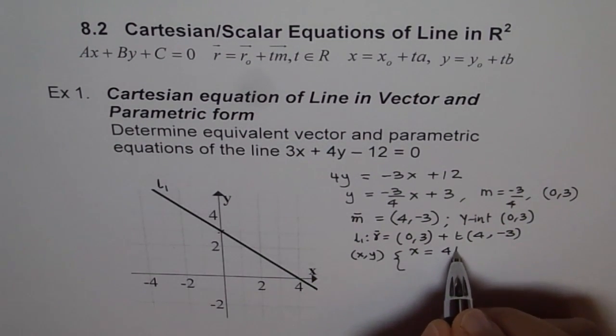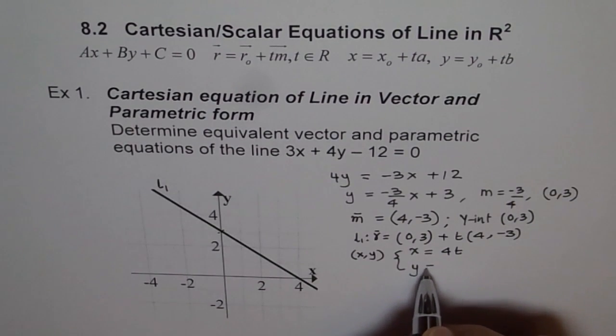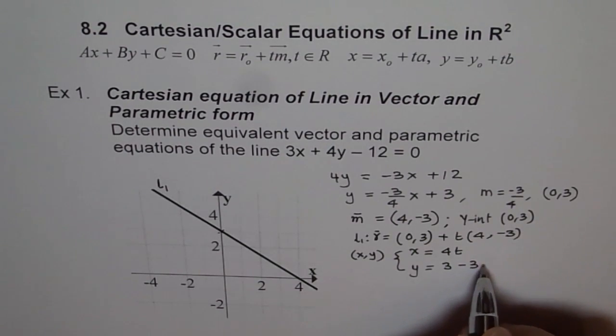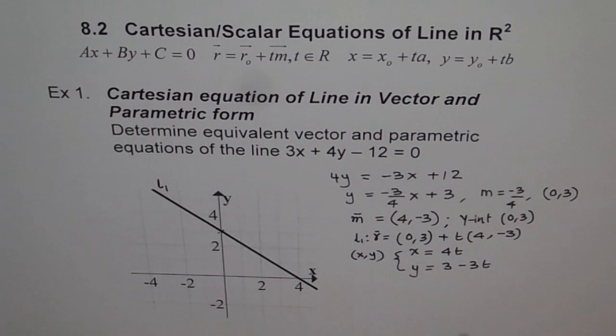And Y is equals to 3 minus 3T. So that becomes our equation in the parametric form. So you can see how we can change or we can find vector and parametric equations from the given Cartesian equation.